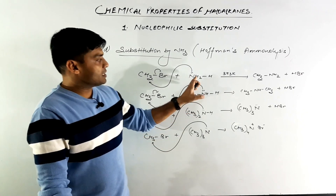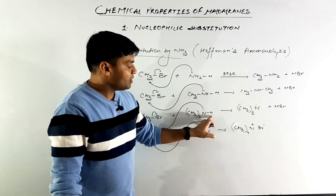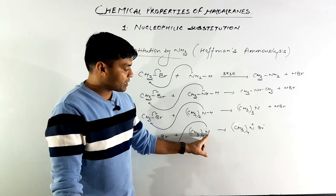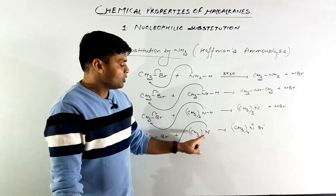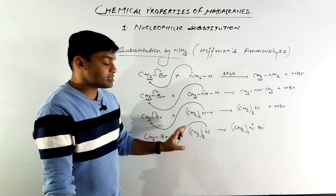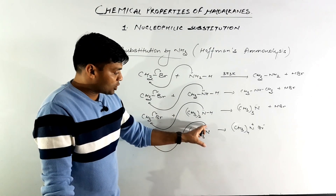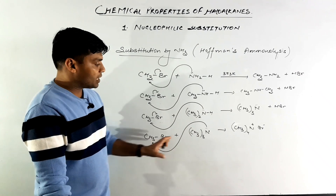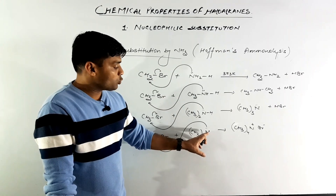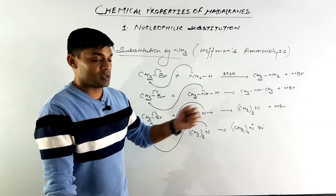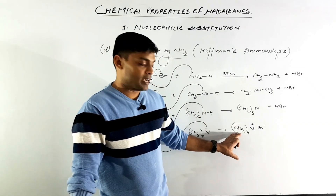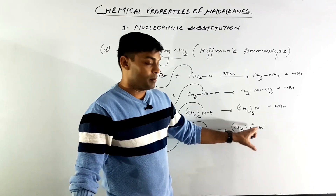Note that as long as hydrogen was available on nitrogen, substitution continued. In the last step, since no H is available on nitrogen, this fourth step is not a substitution reaction but an addition reaction. Nitrogen, through its lone pair, attacks methyl and due to overvalency, gets a positive charge, attracting Br⁻ to form tetramethyl ammonium bromide.